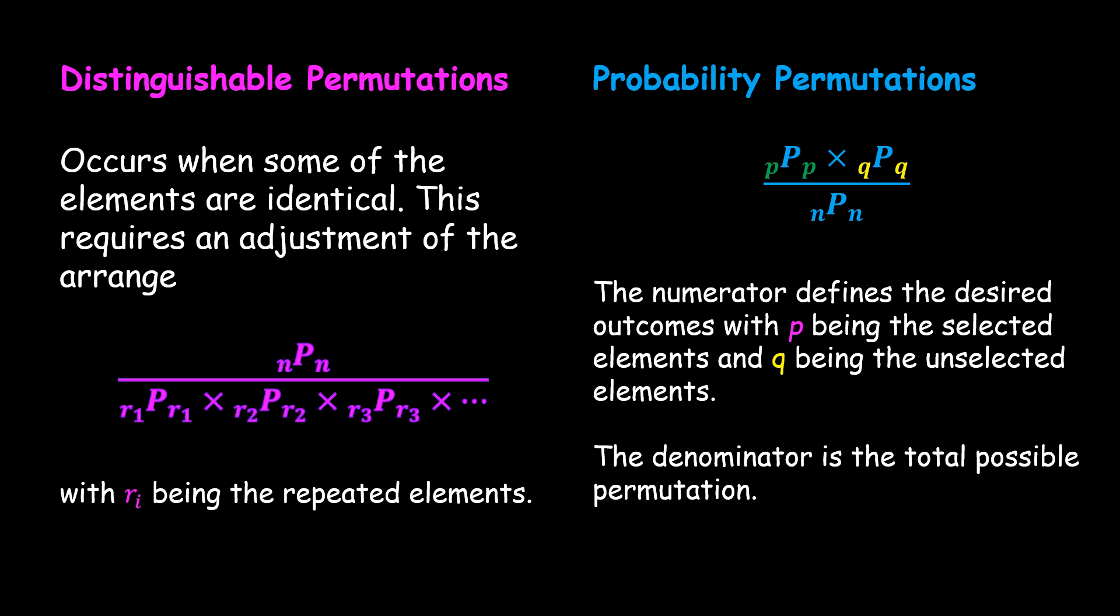We also work with probability permutations. We have the formula shown. In this case, the numerator defines the desired outcomes of P being selected elements and Q being the unselected or undesired element. The denominator will be the total possible permutation.